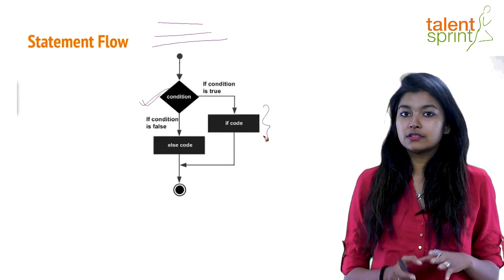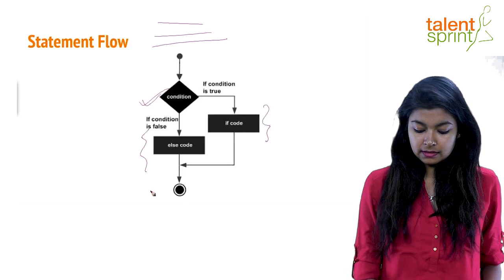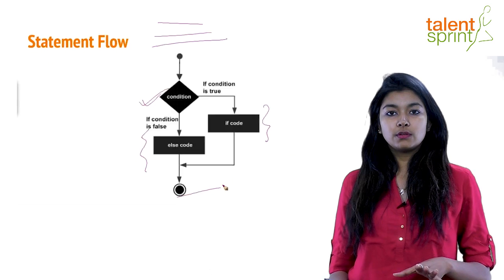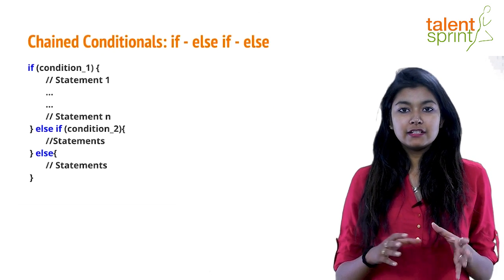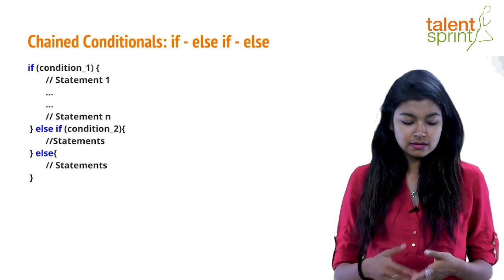But if the condition turns out to be false you go straight ahead to the else code and then continue with the rest of the program. So this is a very basic flow of if-else statements. Now moving on to the if-else-if construct that I talked about - that is chained conditionals.